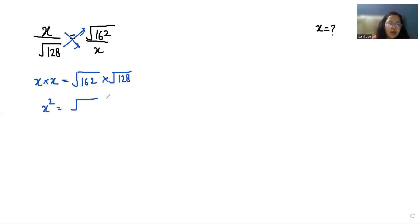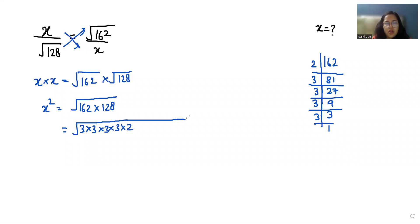And we can write it as 162 times 128. Now I am going to do the prime factorization of 162 starting with 2, 81, with 3, 27. When we divide by 3 again it gives us 9, when we divide by 3 again, 3 and 3, 1. So we can write 162 as 2 times 3 to the 4th.